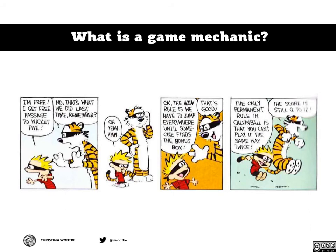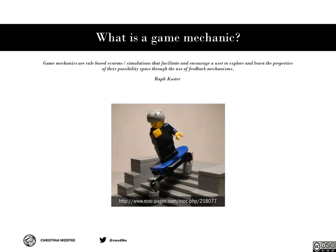When we talk about game mechanics — and we do talk about game mechanics all the time — what are we actually talking about? Calvin Ball is a great example where the only permanent rule is you can't play it the same way twice. Raf Koster, who wrote A Theory of Fun for Game Design, says game mechanics are rule-based systems and simulations that facilitate and encourage the user to explore and learn the properties of their possibility space through the use of feedback mechanisms.